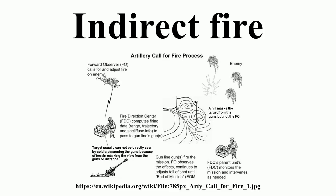Adjusting means some form of observation is used to correct the fall of shot onto the target. There are several possible reasons for this: the geospatial relationship between gun and target is not accurately known; good quality data for non-standard conditions is unavailable; or the target is moving or expected to move. Adjusted and predicted fire are not mutually exclusive — the former may use predicted data and the latter may need adjusting in some circumstances.